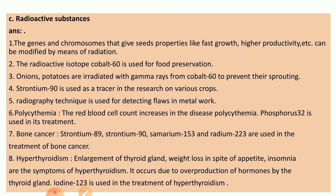C: Radioactive substances. The genes and chromosomes that give seeds properties like fast growth and higher productivity can be modified by means of radiation. The radioactive isotope cobalt-60 is used for food preservation. Onions and potatoes are irradiated with gamma rays from cobalt-60 to prevent their sprouting.